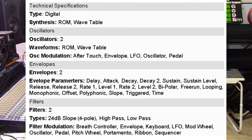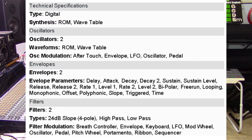This is a digital sound module and the type of synthesis it uses is ROM — read-only memory — and wavetable. It has two oscillators with ROM and wavetable waveforms. The oscillator modulation includes aftertouch, envelope, LFO, oscillator, and pedal. It has two envelopes; the envelope parameters consist of delay, attack, decay, decay 2, sustain, sustain level, release, release 2, rate 1, level 1, rate 2, level 2, bipolar, free run, looping, monophonic offset, polyphonic slope, triggered, and time.